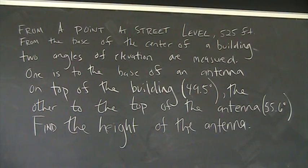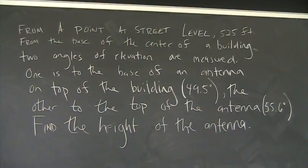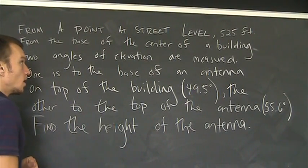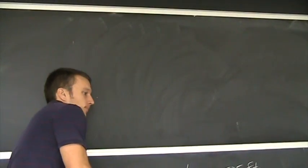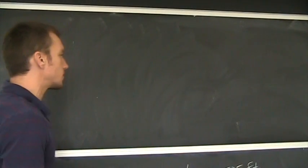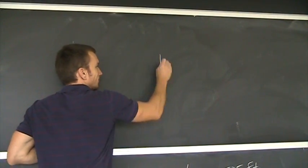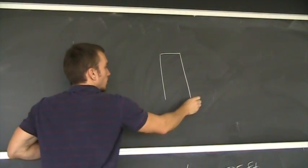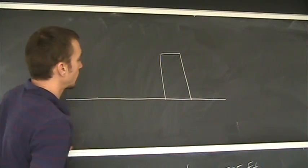Okay, so now that you've written that down, thought about it for a second, let's draw a picture. We always want to draw a picture. So I'm going to draw a picture of this situation. From a point 525 feet from the base of the building, I need a building. There's my building, there's the street.